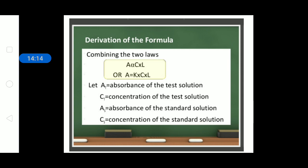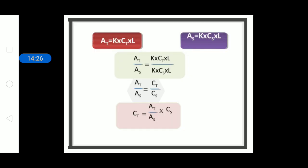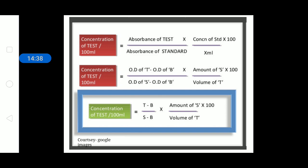For the formulas: Beer's Law gives A ∝ c × l, while Lambert's Law gives A ∝ k × c × l. Combining both, the final formula for concentration is: concentration = (T − B) / (S − B) × (amount of solution / volume of T) × 100, where T is the test, B is the blank, and S is the standard.